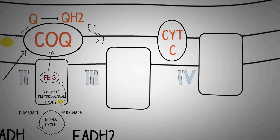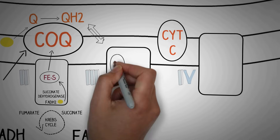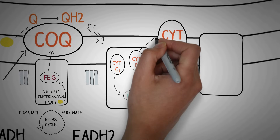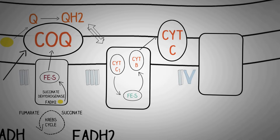The electrons are then transferred to ubiquinol in a similar way as the electrons are transferred from the first complex. Ubiquinol is a freely permeable molecule inside the inner mitochondrial membrane and is used to transfer electrons to the third complex. In the third complex, the electrons are first received by cytochrome c1, which then transfers the electrons to iron-sulfur proteins, which then donate the electrons to cytochrome b. The electrons are then transferred to cytochrome c, an intermediate protein used to donate electrons to the fourth complex.